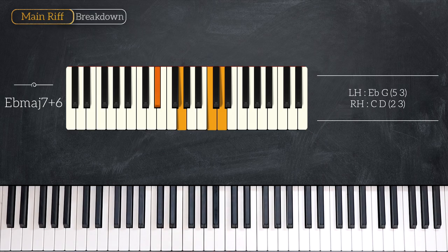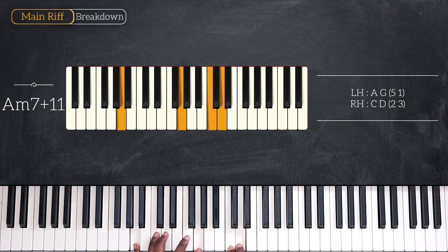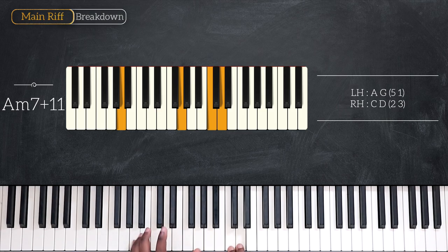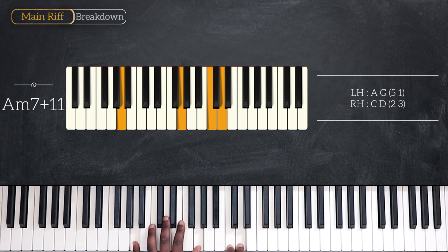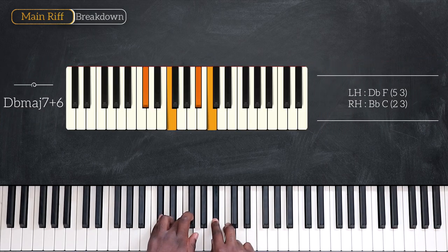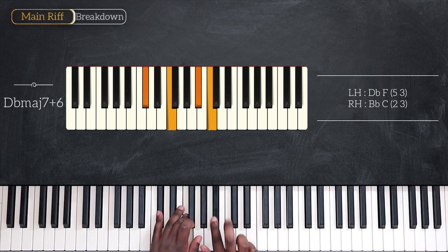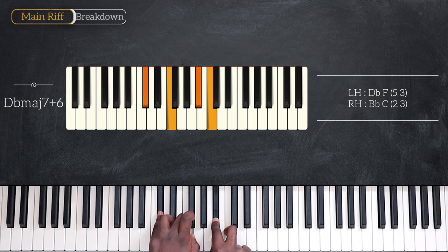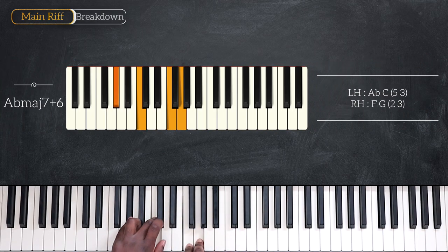Then we have A minor 7 at 11. A and G, C and D. Still playing off key, we're going to play after that Db major 7 at 6. Db and F, Bb and C. And finally ending with Ab major 7 at 6.